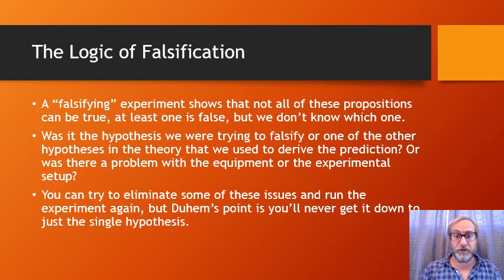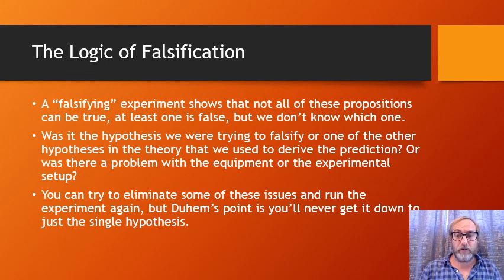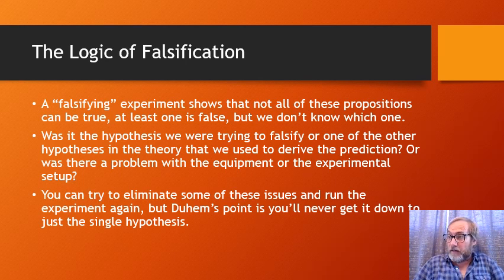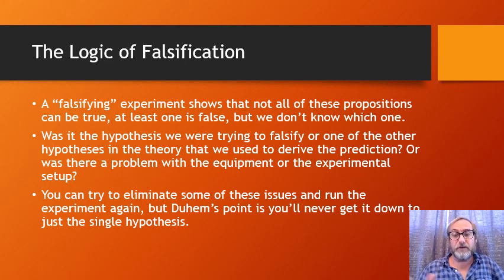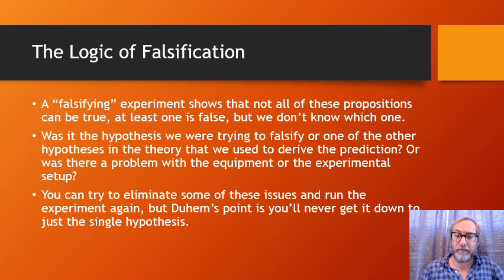A falsifying experiment doesn't show that any particular proposition is false — we just don't know which one is. Scientists are smart and do try to eliminate some of these issues. Newton, for example, was aware he was making assumptions in his prism experiment and tried to rule out various culprits. But the point is, there are so many assumptions that you can never really get to a loss, especially when dealing with abstract theories.